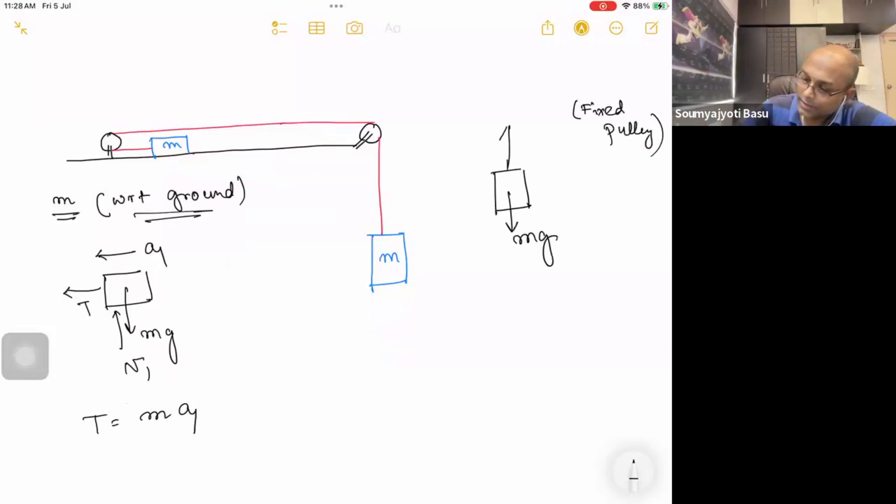We have mg, tension, a1 and a2. For constant motion, this is mg minus T is equal to ma2.